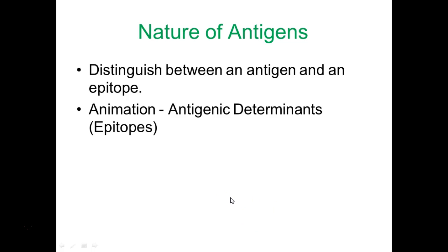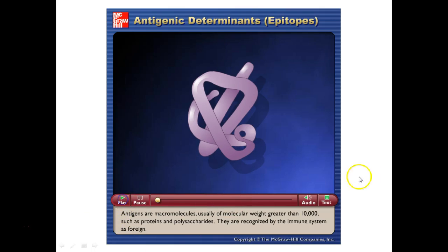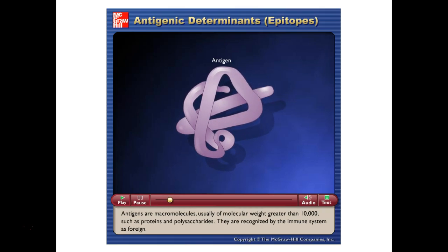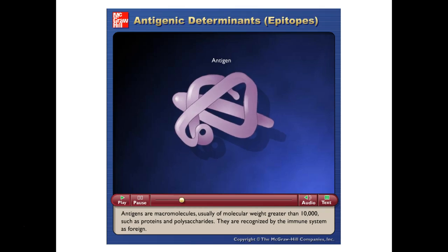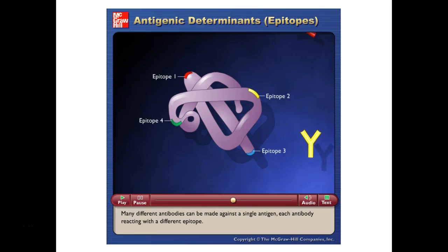You need to be able to distinguish between an antigen and an epitope. Epitopes are sometimes referred to as antigenic determinants. Antigens are macromolecules usually of molecular weight greater than 10,000, such as proteins and polysaccharides, recognized by the immune system as foreign. Individual antibodies are not made against the entire antigen molecule, but react to particular chemical groups known as antigenic determinants or epitopes. Many different antibodies can be made against a single antigen, each reacting with a different epitope.